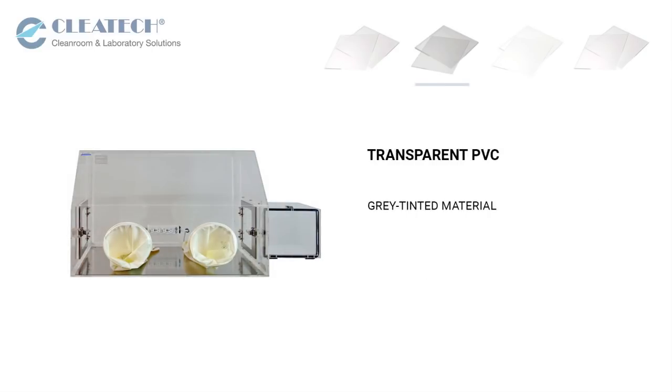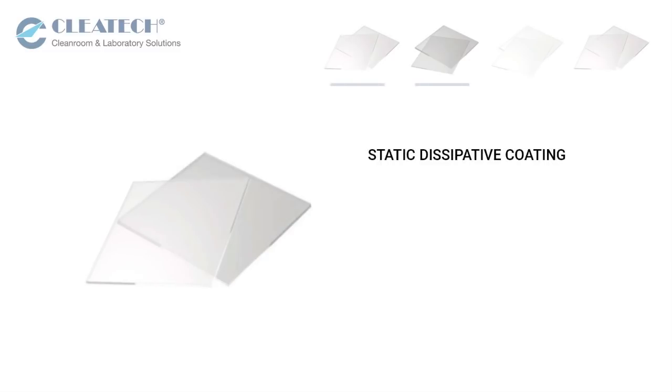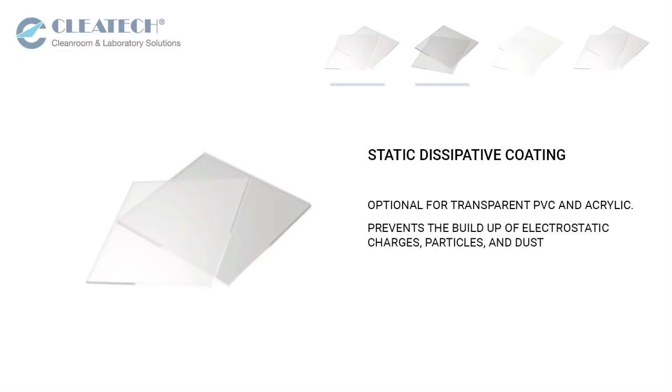Transparent PVC is a gray tinted material that is resistant to many corrosive chemicals and alcohol. Static dissipative glove boxes available in transparent PVC and acrylic. The coating prevents the buildup of electrostatic charges, particles and dust. Coated materials are more chemical resistant compared to non-dissipative material.